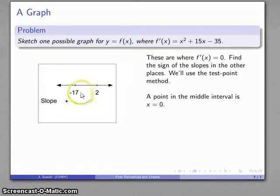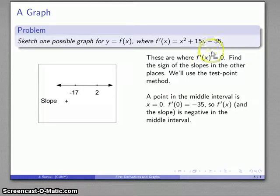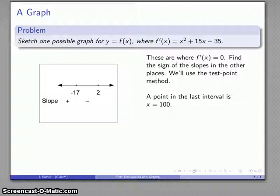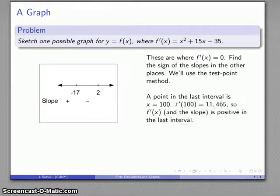Likewise we can pick a point in the middle of this next interval. 0 happens to be right in there so we can try 0. At that point if I substitute 0 into my derivative function I get -35. So the derivative and the slope is going to be negative in that middle interval. Finally our last interval, a good test point x = 100. I'll substitute that into my derivative formula and find that the derivative is 11,465, importantly positive. So in our first interval our slope is positive, in the middle interval our slope is negative, and at the last interval our slope is positive once again.